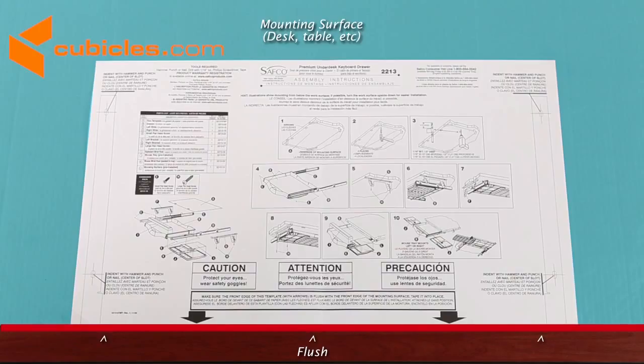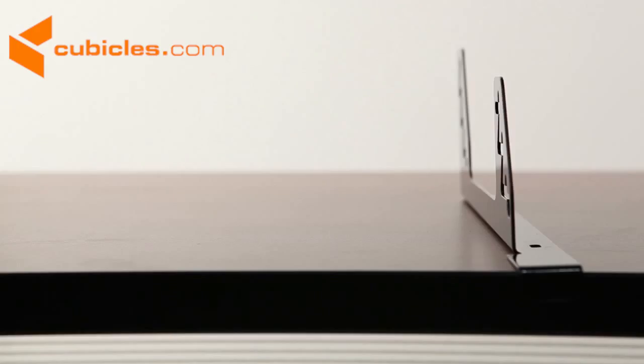On the instructions are four marks. Drill a small starter hole in each of those four spots. These holes will be used to attach our brackets.